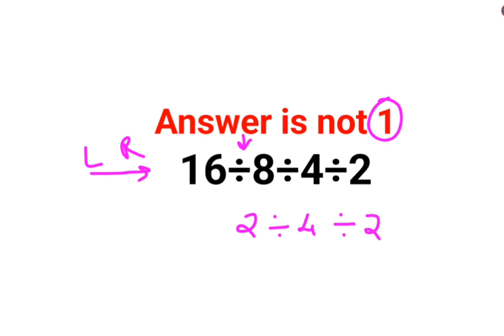So next, the next division which happens from your left hand side, which comes first, is 2 divided by 4, which is 1 upon 2, divided by 2.